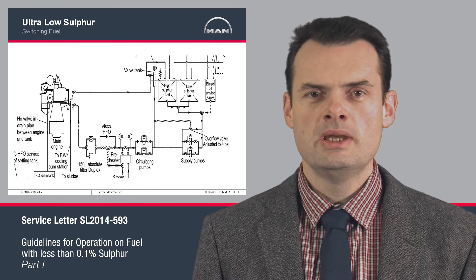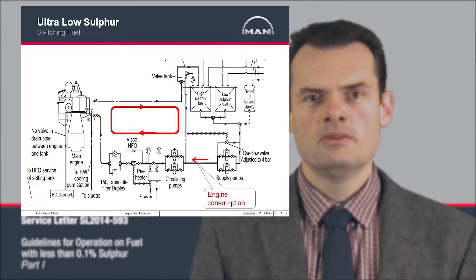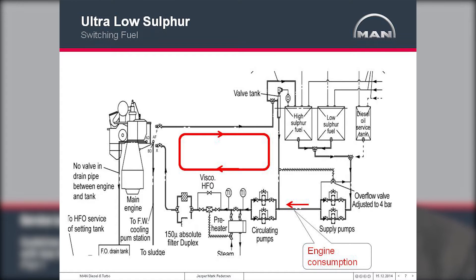The fuel system for the main engine is made of a recirculating pipe system. The fuels in this circuit are recirculated to maintain heat, and when you do the switch to distillate, the two fuels in the circuit will be mixed together. The heat in the circuit for the heavy fuel will have a big impact on the viscosity of the incoming distillates, and it is therefore very important to keep an eye on viscosity when switching from a relatively hot heavy fuel to a colder distillate.